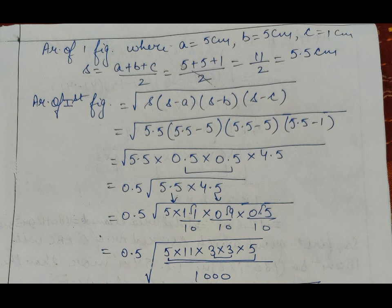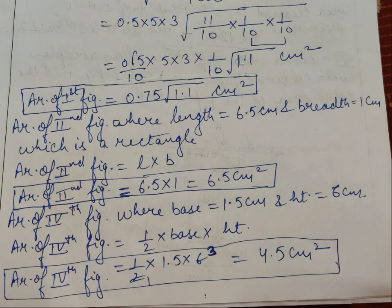After finding the value of s, we put the values into Heron's formula and get √(5.5 × 0.5 × 0.5 × 4.5). After solving further, we get the answer as (0.5/10) × 5 × 3 × (1/10) × √1.1 cm². Our final answer is: area of the first figure = 0.75√1.1 cm².